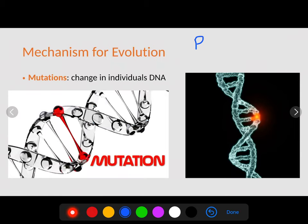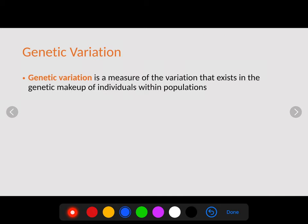A mutation in your body could have a positive effect, which could actually lead to better survivability in the organism and allow the population to change — which is kind of how evolution occurs. Or it could have a negative effect, causing some sort of harm. It could also have no effect whatsoever if it changes a non-coding region of the DNA. Mutations are the driving force that affects evolution — they can be positive, negative, or do nothing.